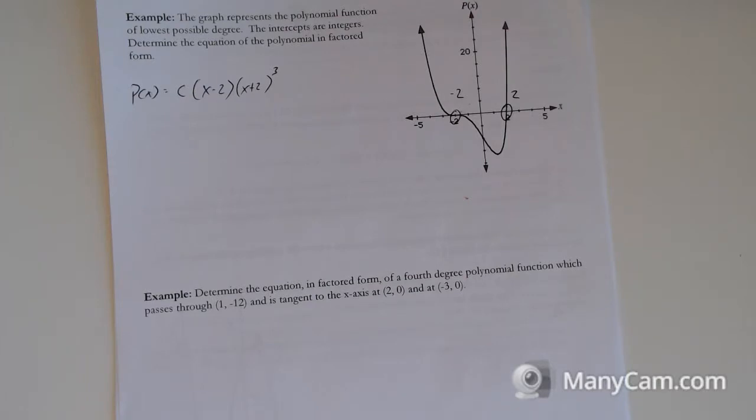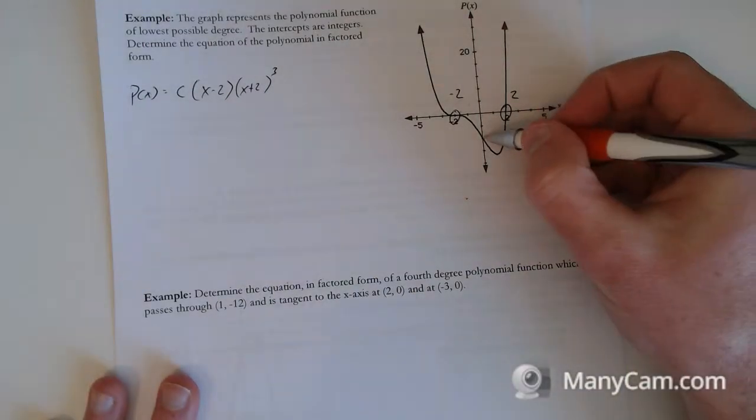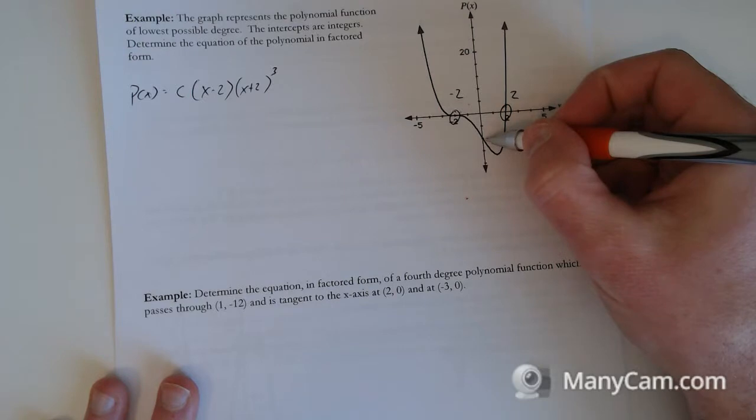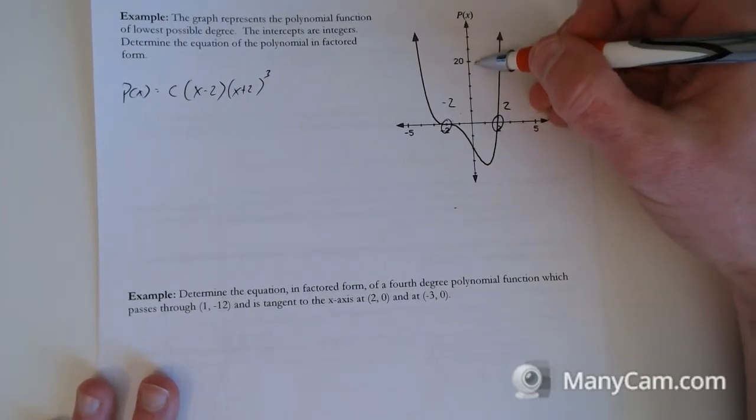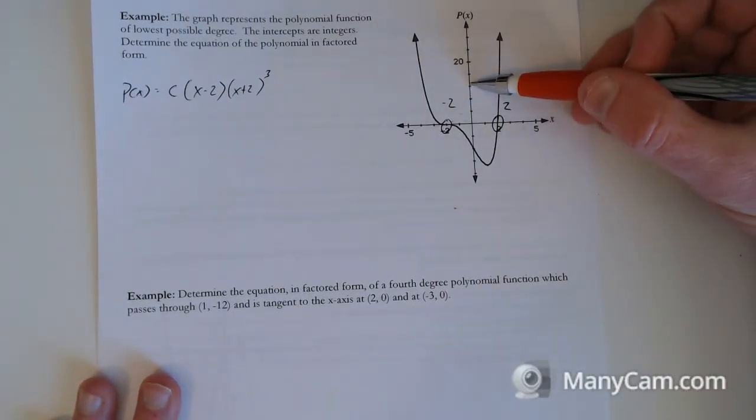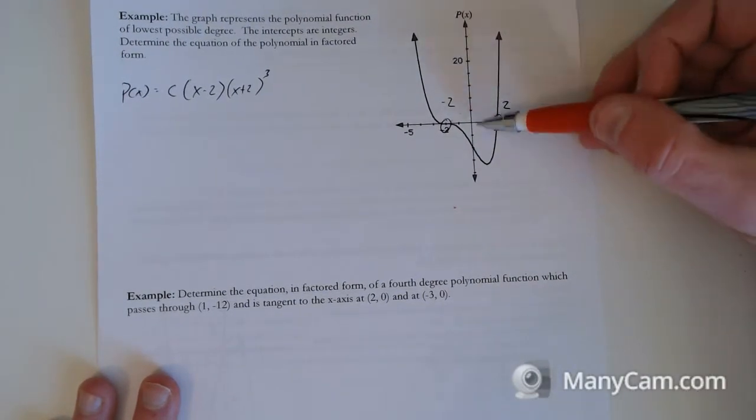So we would start our equation like that. P of x equals some constant c times x minus 2 times x plus 2 cubed. And we need to know the equation for it. So we actually need to sub in some other point now. So we could sub in this point down here. It actually doesn't say how low it is. Oh yeah, it says 20 up here. This is our only indicator of the vertical scale. So 1, 2, 3, 4, 5 gets to 20. So every line is 4.